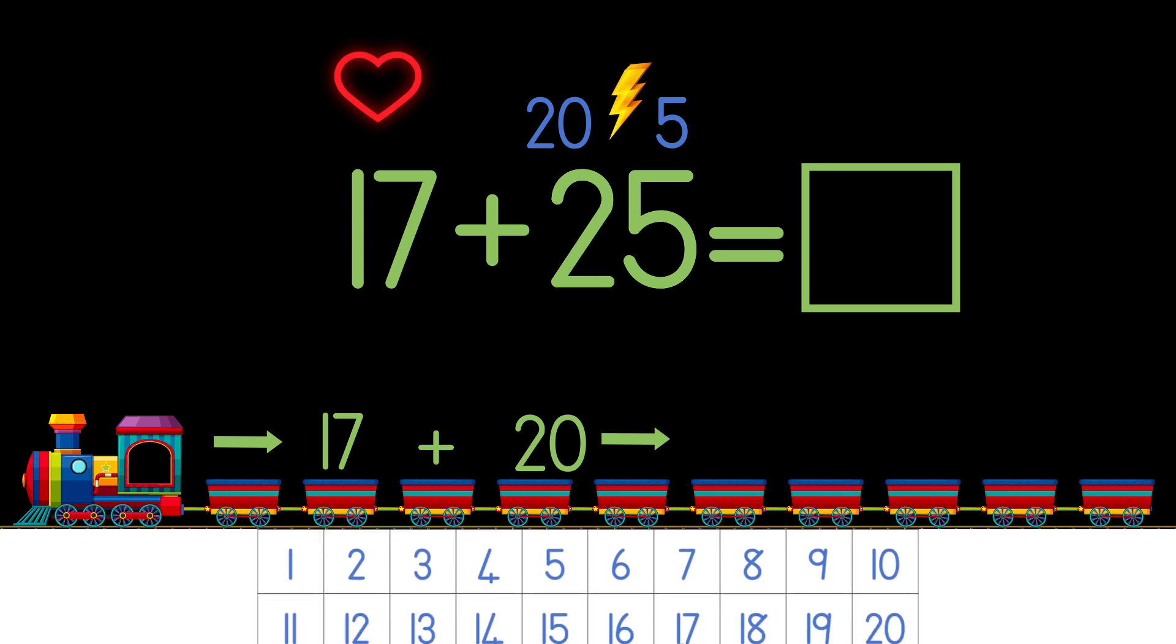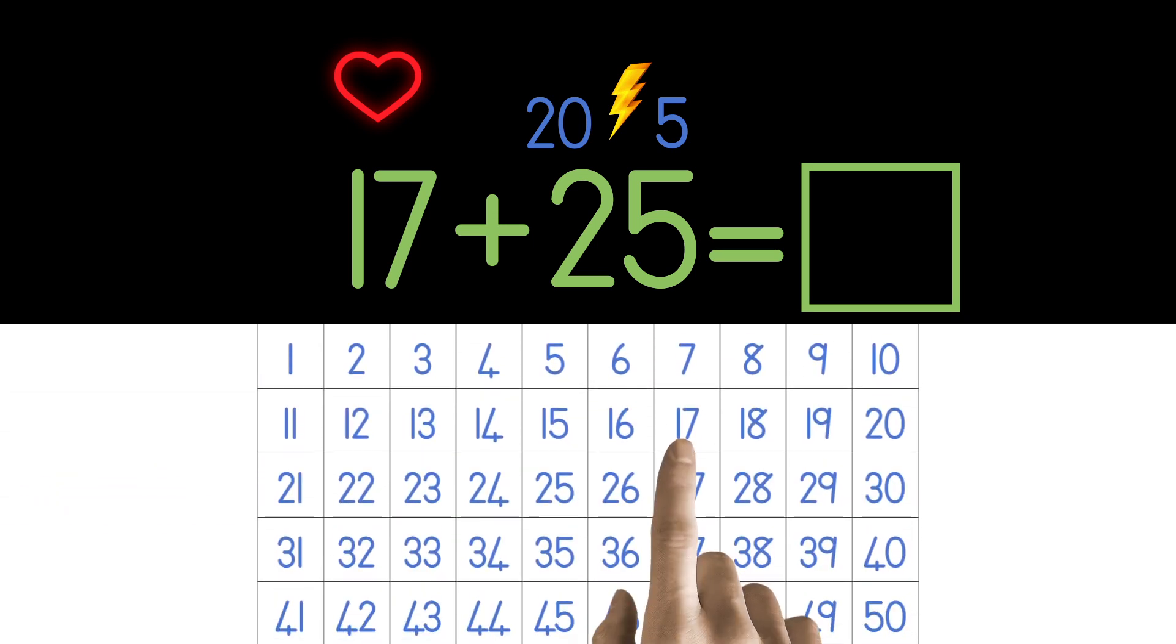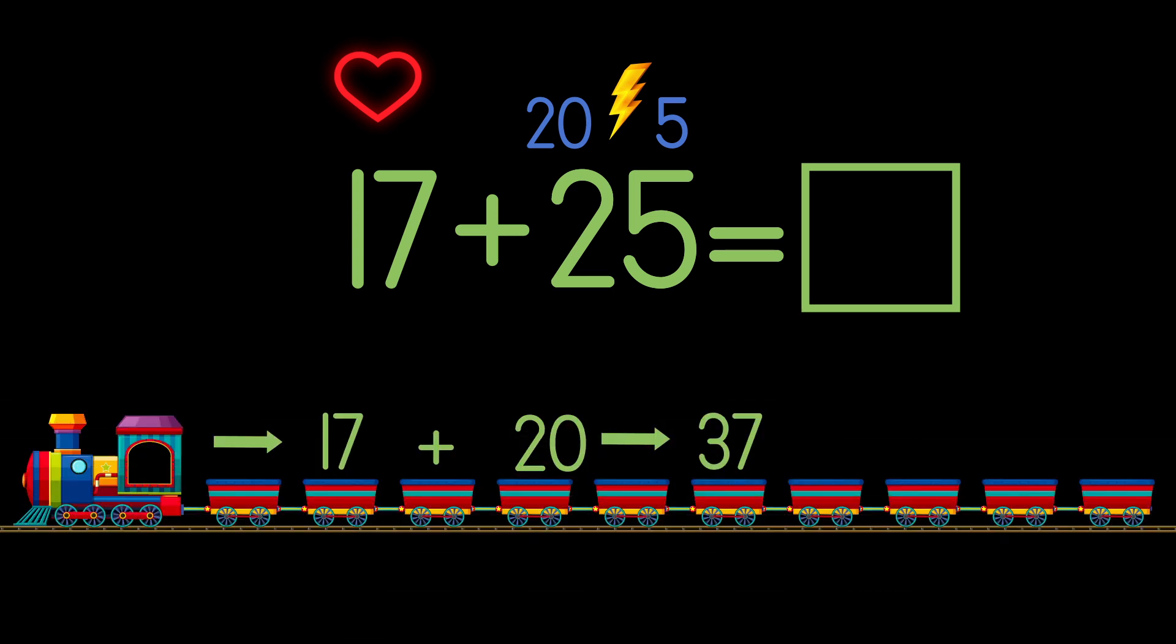We can go to the chart. Start at 17 and then jump two blocks down because 20 has two tens. And we get 37. So we write 37 after the arrow.